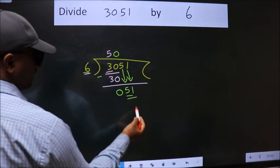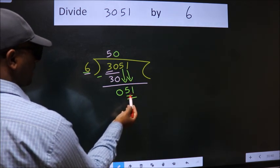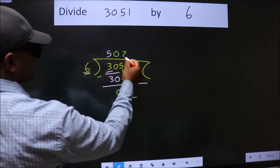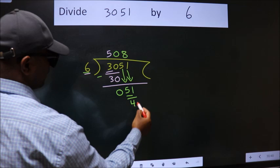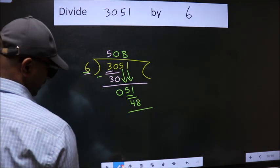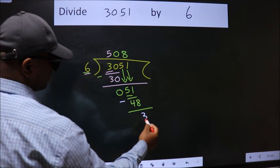So 51. A number close to 51 in the 6 table is 6 times 8, 48. Now we subtract. We get 3.